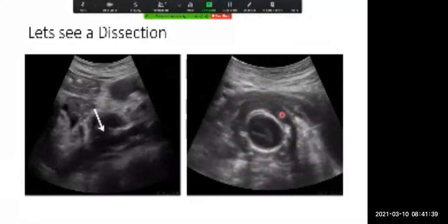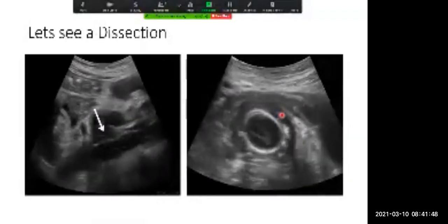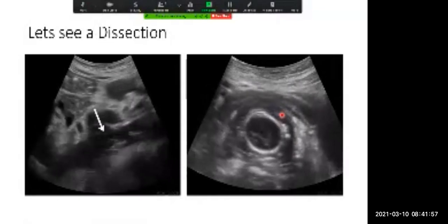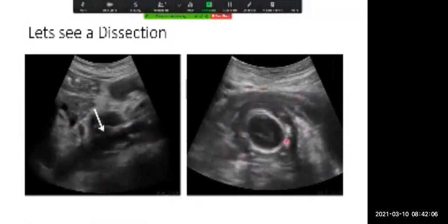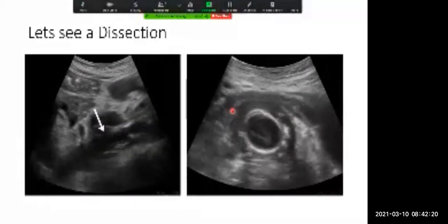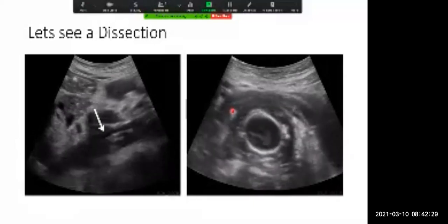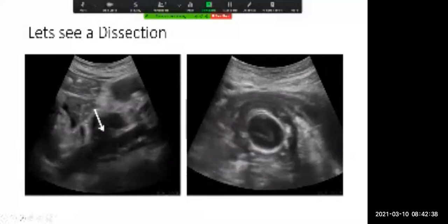We had a young lady — I think it was last year or the year before — who presented with what looked like a uterine mass. When we sent her for an ultrasound, they found something similar to this — something called a false aneurysm extending all the way from the second part right down into the common iliacs. She was immediately taken to theater; they tried to graft her, the first graft failed, and unfortunately she passed away. She was just 19 years old. These things can happen — it doesn't only occur at the extremes of age.